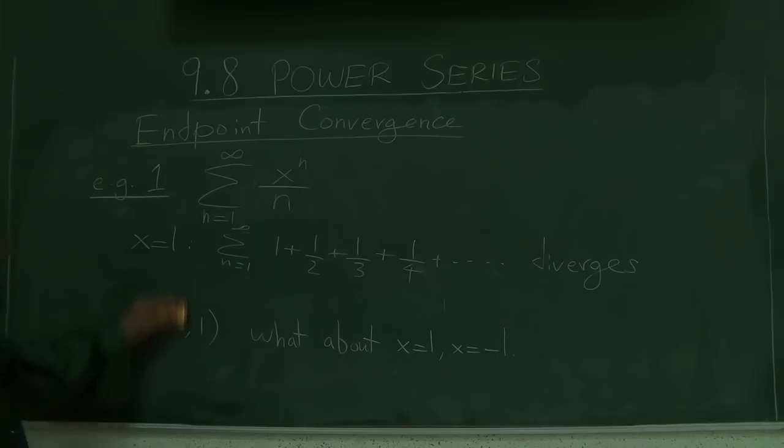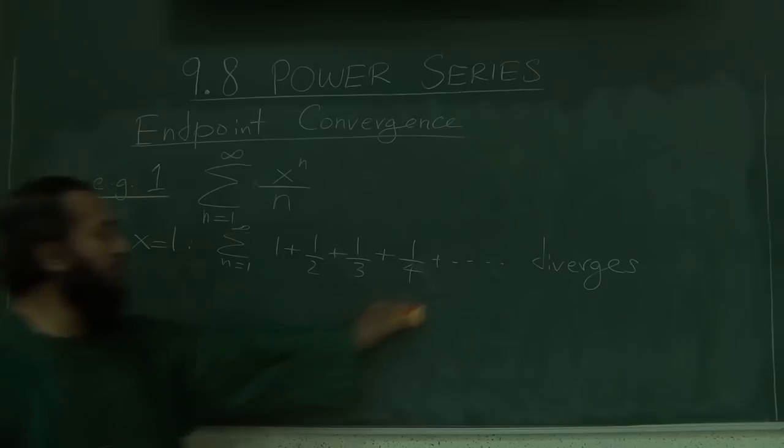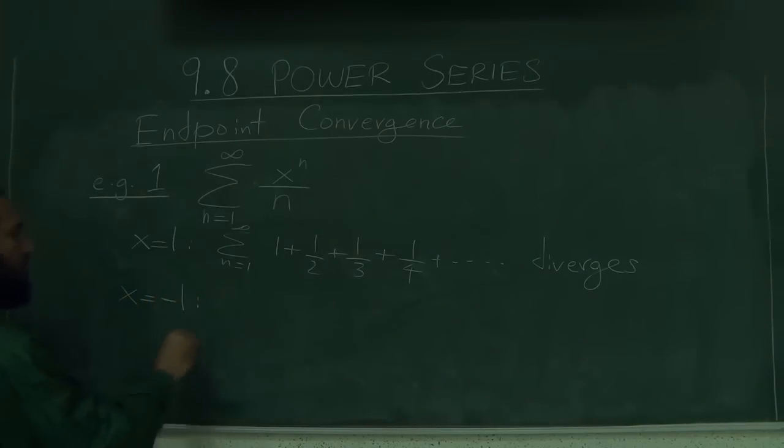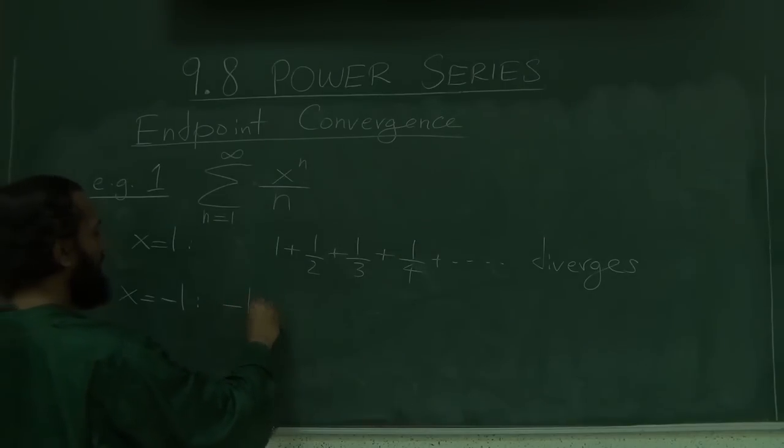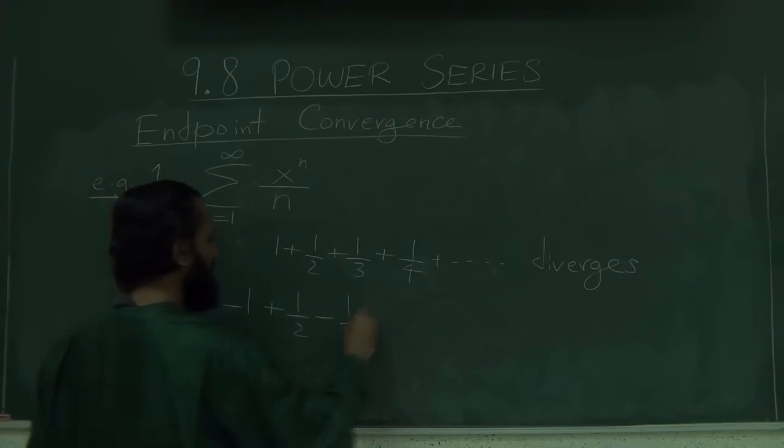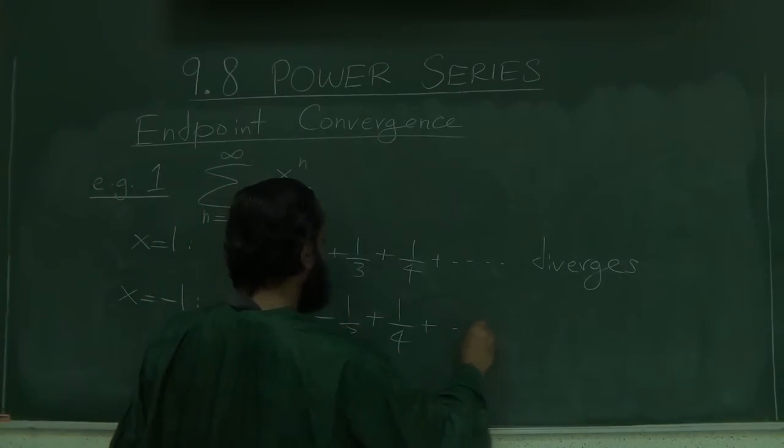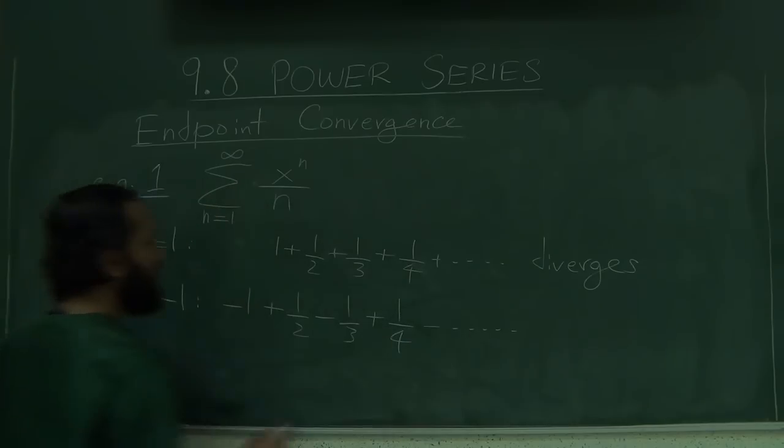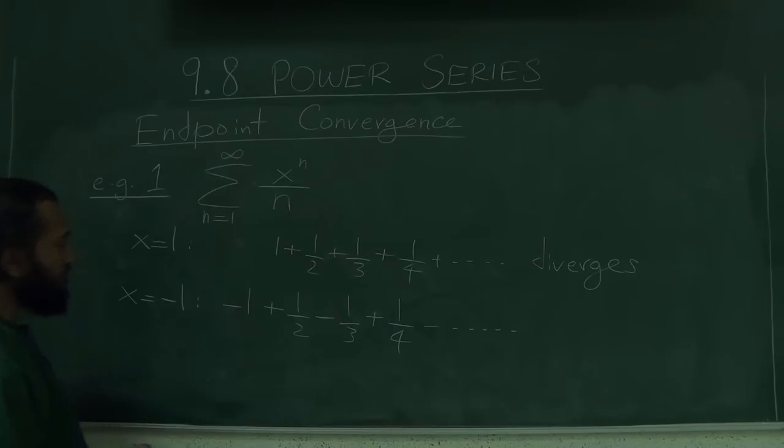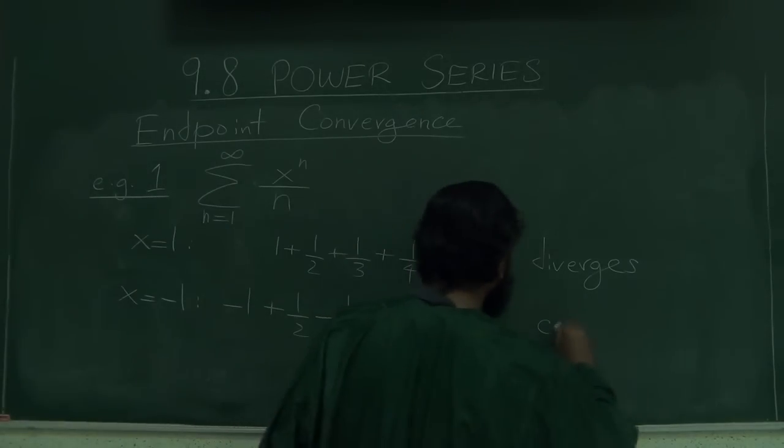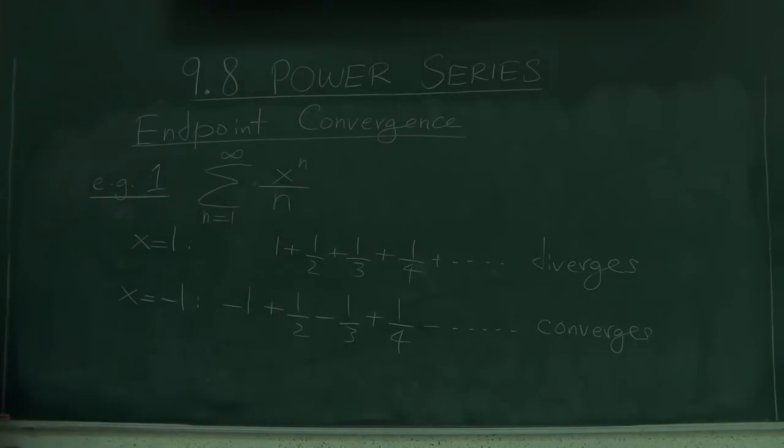On the other hand, when x equals negative 1, what do we get? When x equals negative 1, the first one is negative, then it's positive, negative, positive and so on. Maybe this one is negative 1 fifth. This is the alternating harmonic series and this one converges as we have seen before. You can use the alternating series test on it and it tells you that it converges.